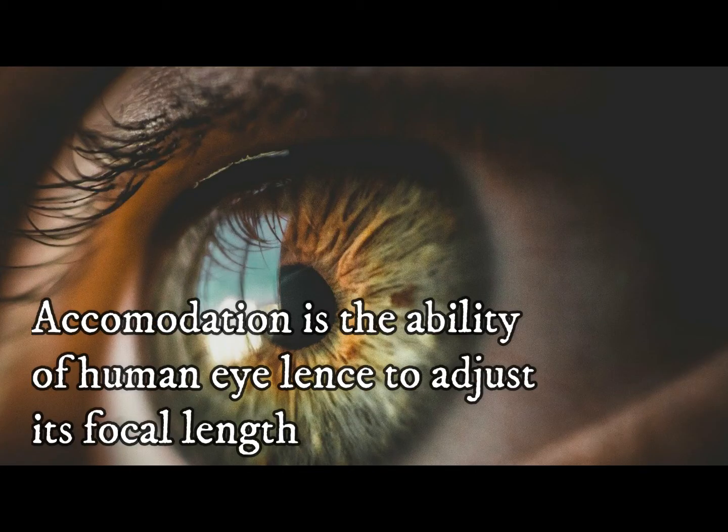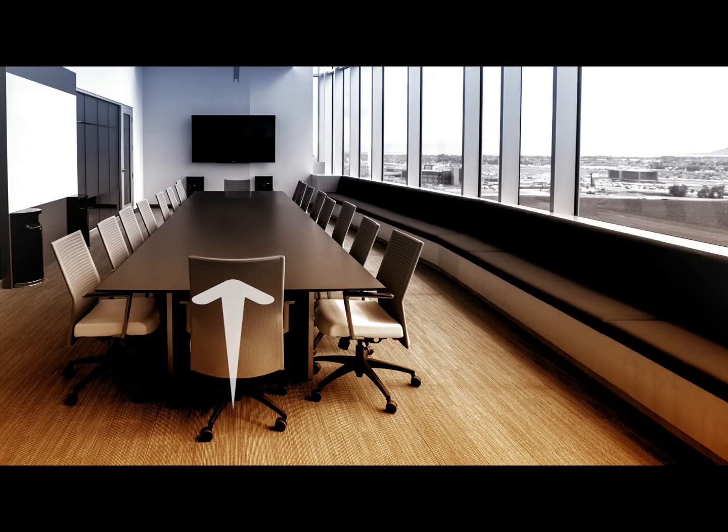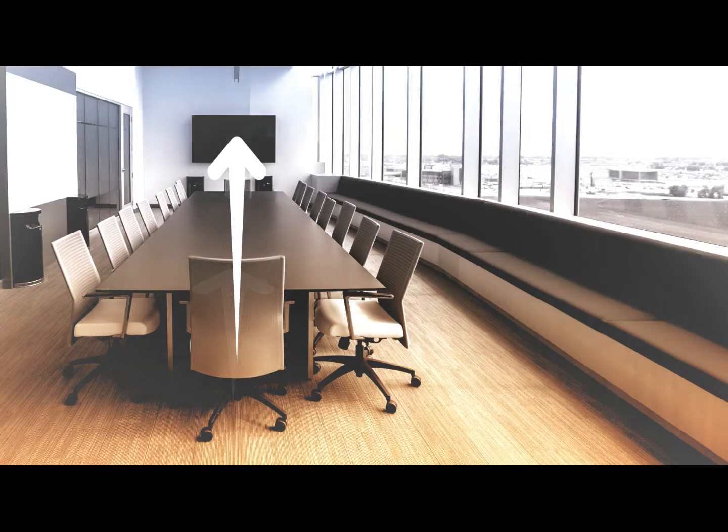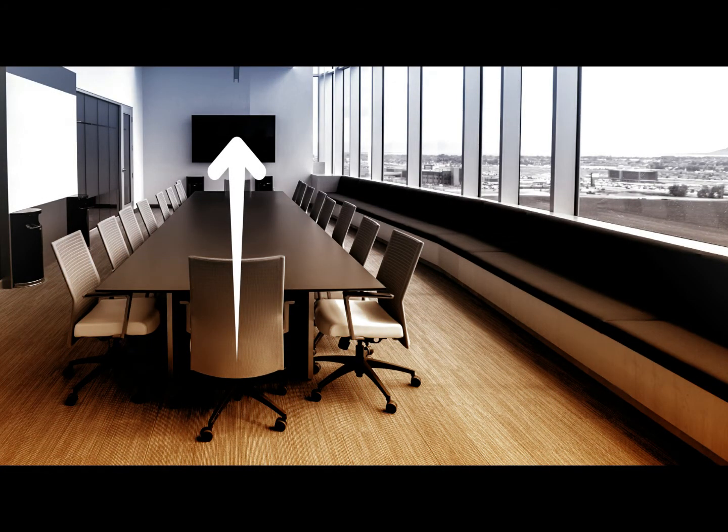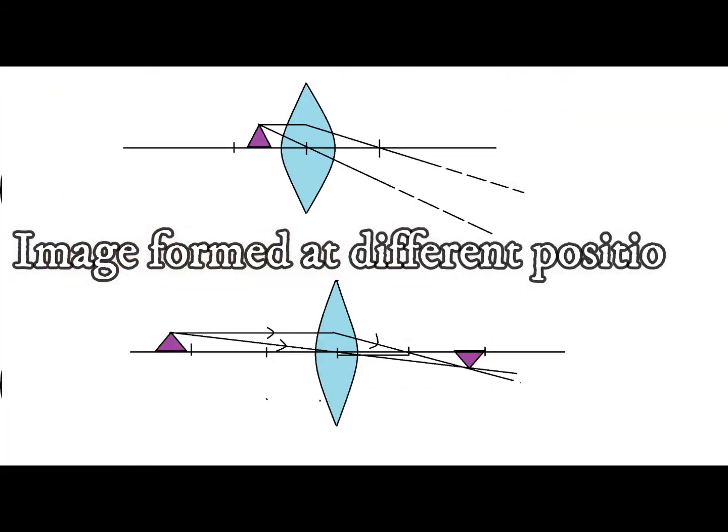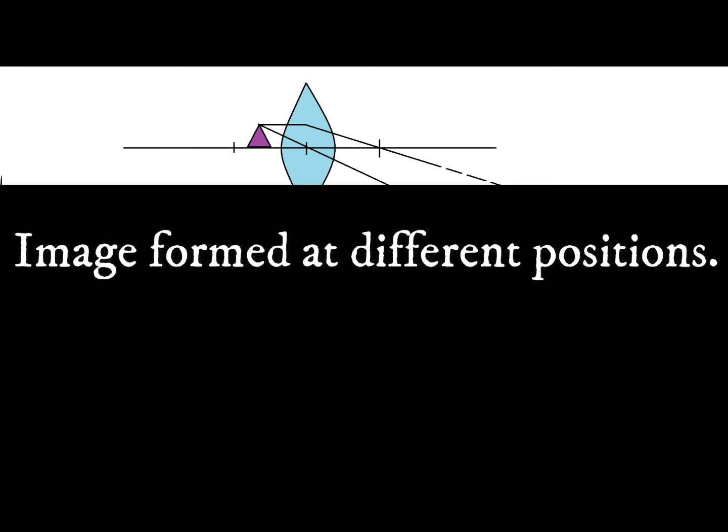The next thing is accommodation. What is accommodation? Accommodation is the ability of human eye lens to adjust its focal length so that it can focus near as well as far objects. In normal lenses, there is a fixed focal length. If we place the objects in different positions, the image will also be formed at different positions.